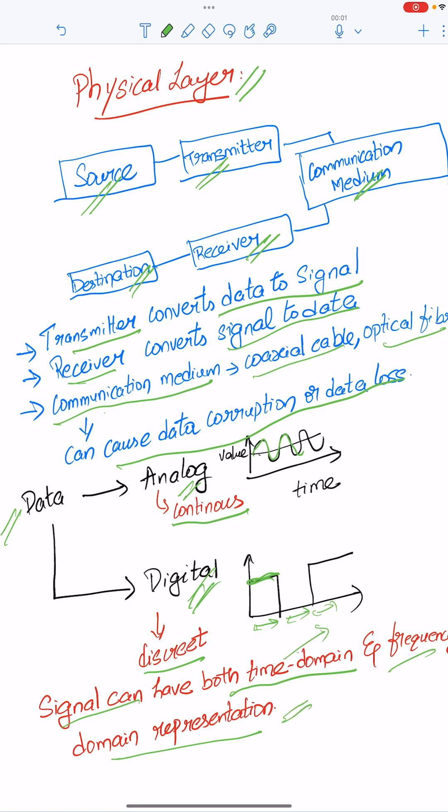Time domain representation means the value is given as a function of time. If the value or amplitude is given as a function of frequency, that is called frequency domain representation.